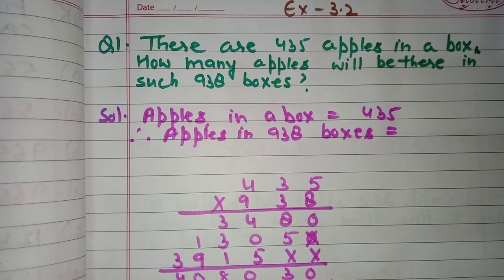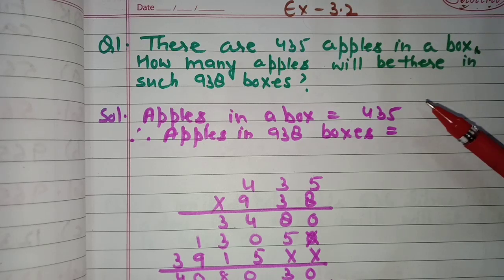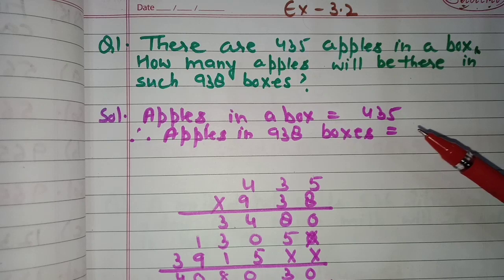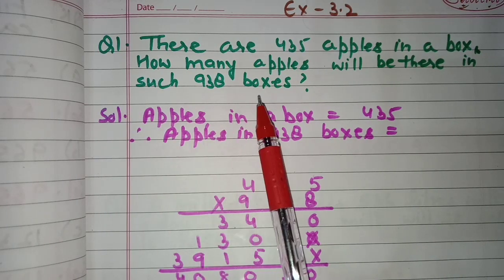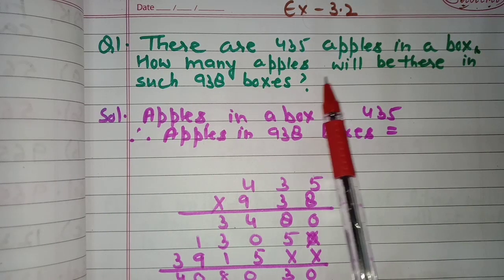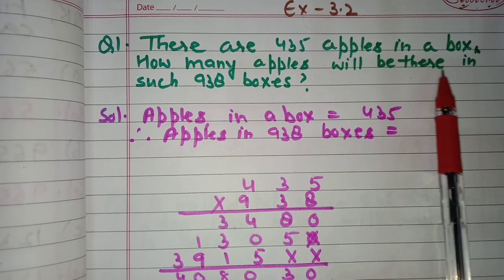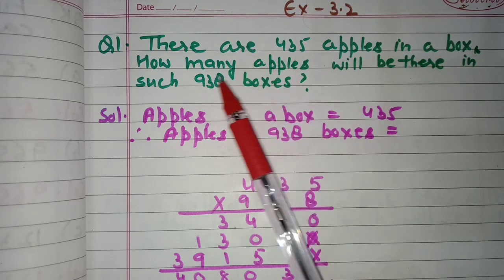Hello everyone, today we will start Exercise 3.2 of Unit 3, that is Multiplication and Division. This exercise is based on word problems related to multiplication. Question number one: there are 435 apples in a box.